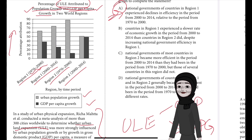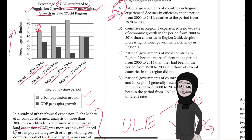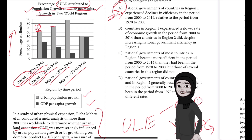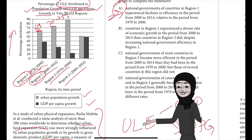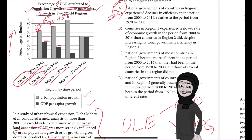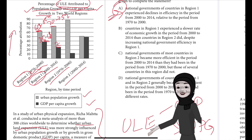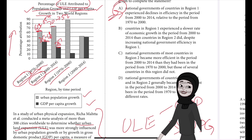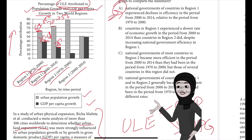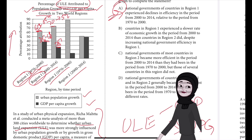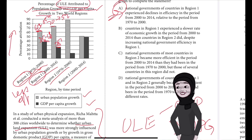According to the graph, Region 1 saw an increase in the percentage attributed to urban population growth from 1970 to 2000 — the population attribution was in the 60 to 65 percent range — and from 2000 to 2014 it increased slightly to about 70 to 75 percent. The GDP attribution in Region 1 decreased: earlier it was between 35 to 40 percent from 1970 to 2000, but then dropped to about 25 percent from 2000 to 2014. Because the GDP per capita percentage decreased — the opposite of what Meta et al. claimed would happen with more efficient governments — the data suggests that governments of Region 1 became less efficient over that period.